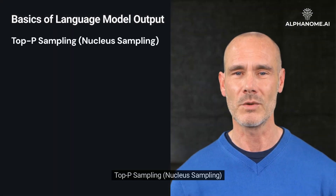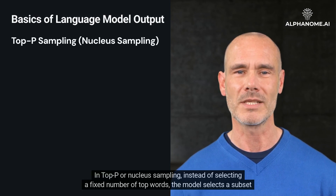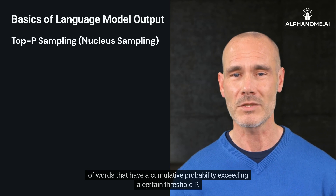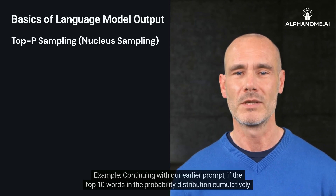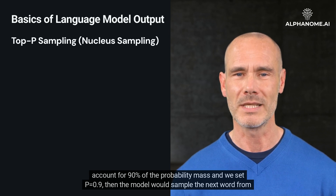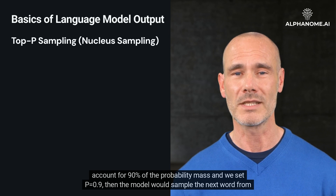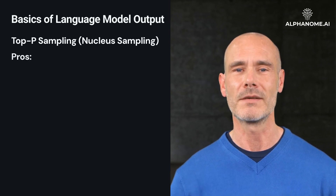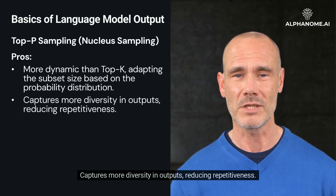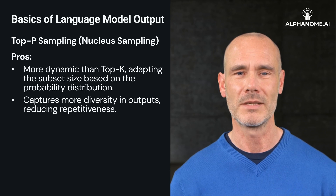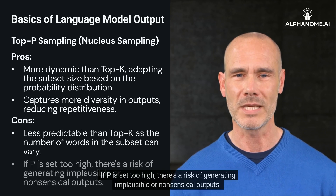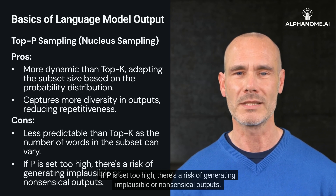Top P sampling, also called nucleus sampling. In Top P or nucleus sampling, instead of selecting a fixed number of top words, the model selects a subset of words that have a cumulative probability exceeding a certain threshold P. For example, continuing with our earlier prompt, if the top 10 words in the probability distribution cumulatively account for 90% of the probability mass and we set P equals 0.9, then the model would sample the next word from this set of 10 words. Pros: more dynamic than Top K, adapting the subset size based on the probability distribution, and captures more diversity in outputs, reducing repetitiveness. Cons: less predictable than Top K as the number of words in the subset can vary, and if P is set too high, there's a risk of generating implausible or nonsensical outputs.